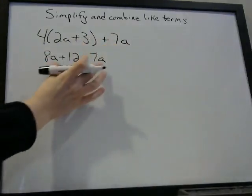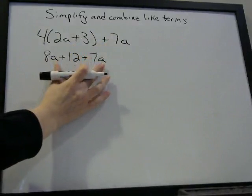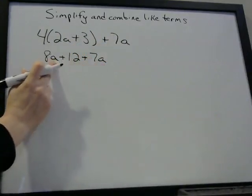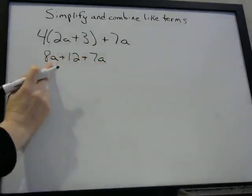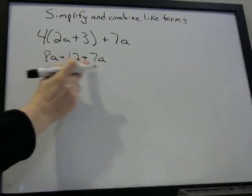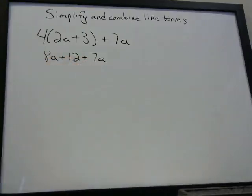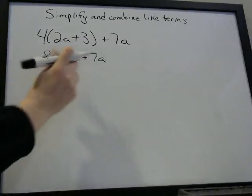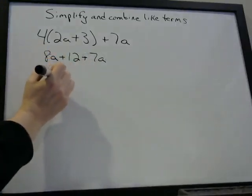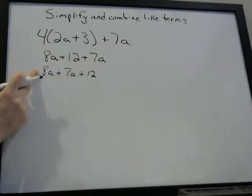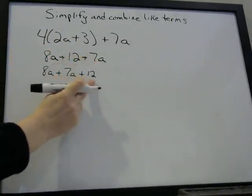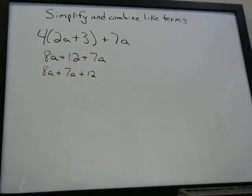And then what we're going to do is put like terms together. Here's an A and here's an A, so we're going to put them beside each other and then combine them. Since we have addition, we can use the commutative property — we can move these around. So 8A plus 7A plus 12. These two expressions are equivalent; I've just changed these two terms, but we can do that with addition.